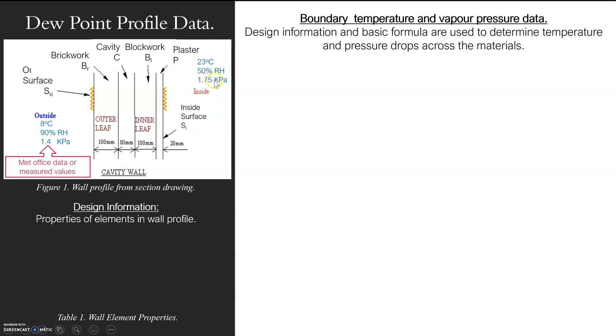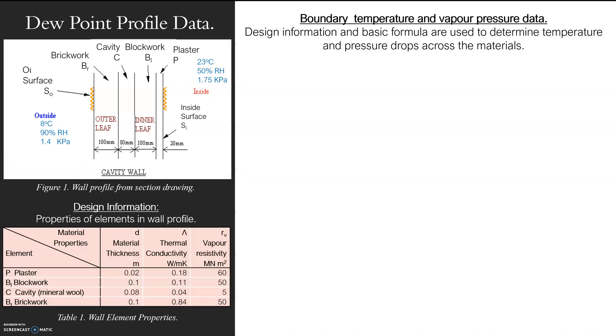Inside I've got 23 degrees, 50 percent relative humidity and 1.75. So what else do I need to know? Well, I need to know the thickness of the materials. I've got my profile there, which is fine. So this is a nice visual.